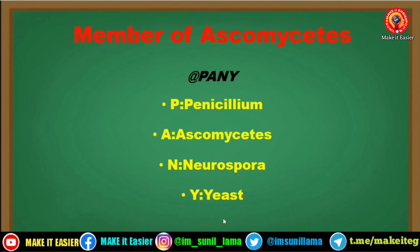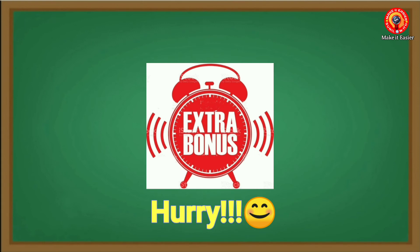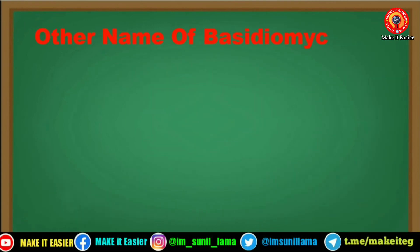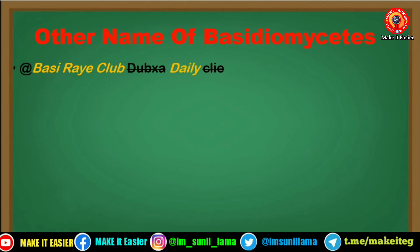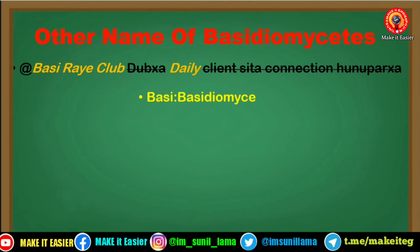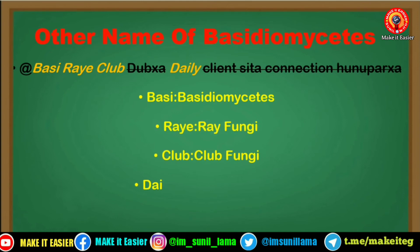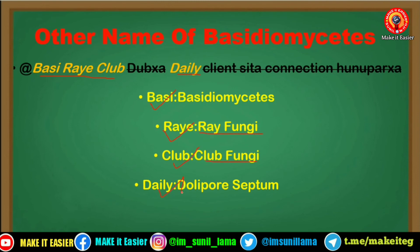As a bonus tip, Basidiomycetes have four different nicknames, which are also important for entrance exams. The mnemonic is 'Basi Rai Club Dubsa Daily Clan Sitta Connection Universal', where Basi stands for Basidiomycetes, Rai for Ray fungi, Club for Club fungi, and Daily for Dolipore septum. These are the other names of Basidiomycetes.